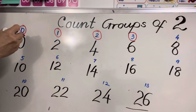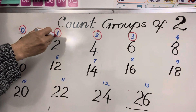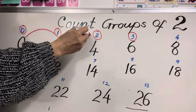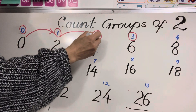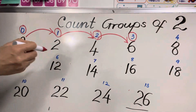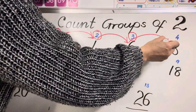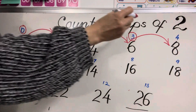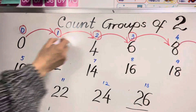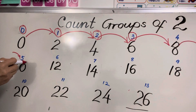Look: 1 group of 2, you jump 1 time. 2 groups of 2 is 4, you jump 2 times. 3 groups of 2 is 6, you jump 3 times. 4 groups of 2, you jump 4 times — 8. 5 groups of 2, you jump 5 times — 10. 5 groups of 2 is 10.